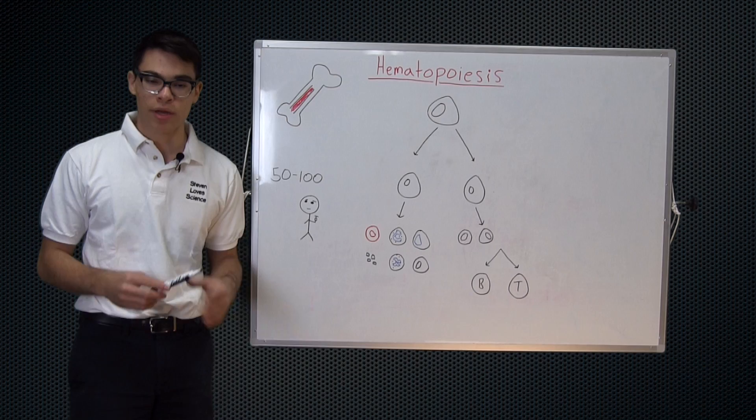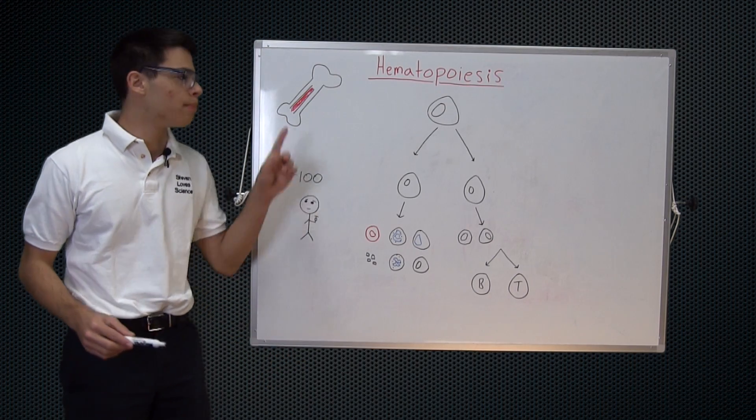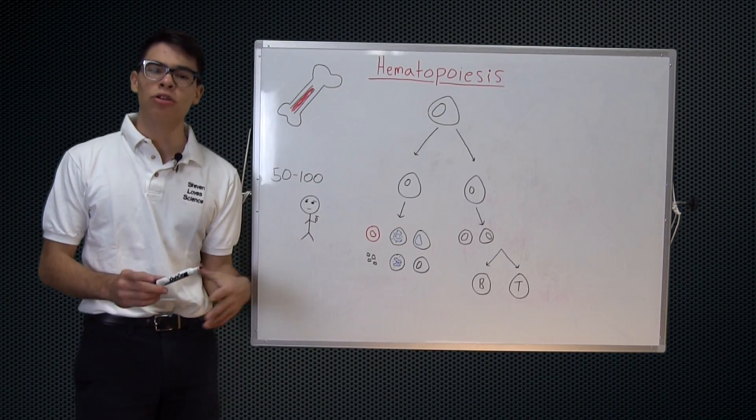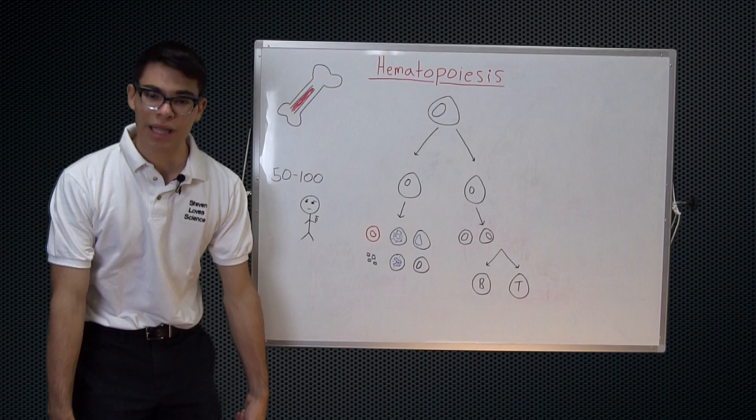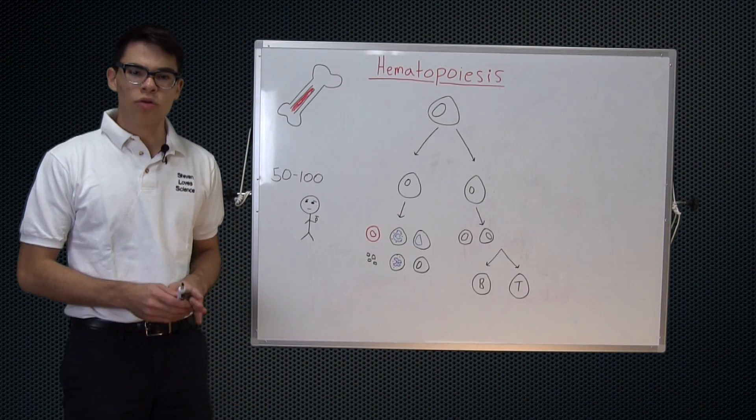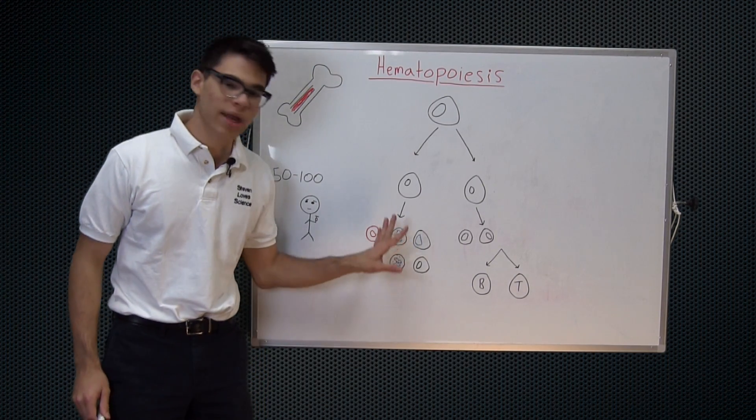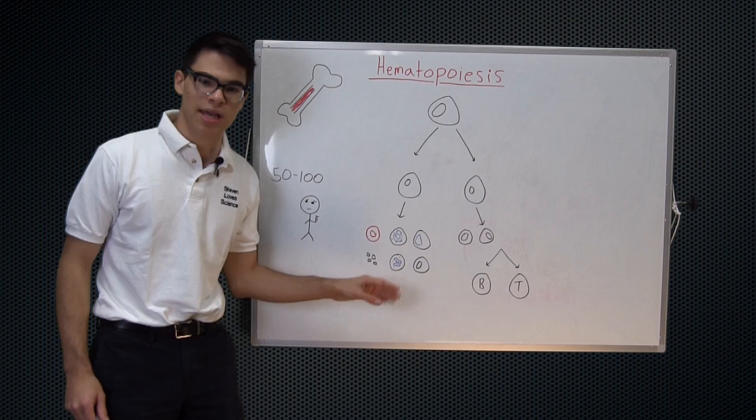So when discussing hematopoiesis we're going to discuss a process that occurs in the bone marrow, predominantly in the long bones of the arms, legs, and hip. Looking at the bottom of the board over here we can see two main groups of blood cells.